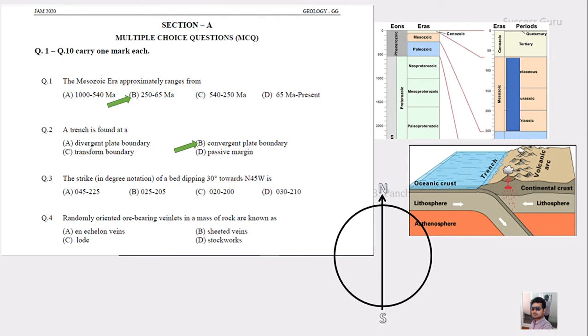What they have given is north 45 degrees west. This is north and this is west, and between this, north 45 degrees west is the dip direction. They asked for the strike direction.